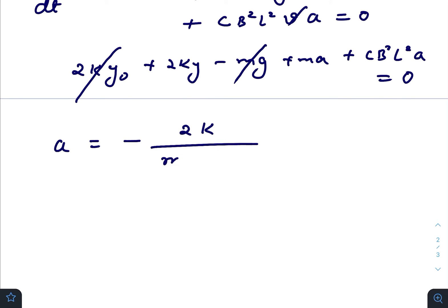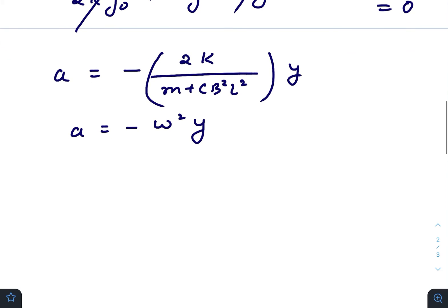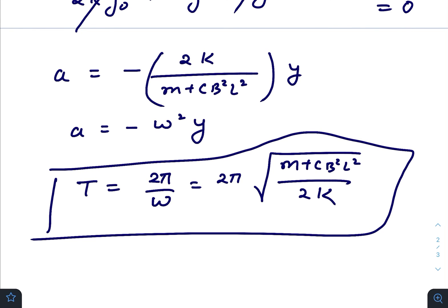We can compare this equation with our traditional equation for simple harmonic motion, which is a equals minus omega squared y, where omega is the angular frequency. The final form of time period would be 2π divided by omega, which gives 2π times square root of (m plus C B squared L squared) divided by 2k. This is the final expression for time period of this whole structure.